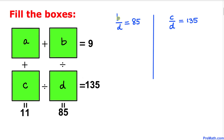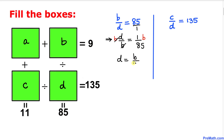Let's focus on this equation first. On the left-hand side we have b divided by d equal to 85. I'll flip both sides to get the reciprocal, so this becomes d over b equal to 1 over 85. Multiplying both sides by b gives us d equal to b divided by 85.